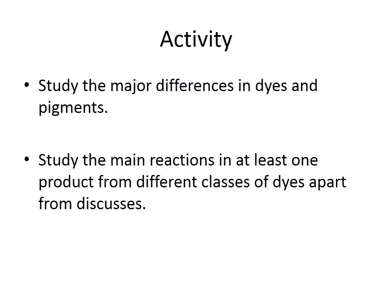An important activity for students is to study the major differences between dyes and pigments, and to study the main reactions for at least one product falling in each different category of dyes — azo dyes, basic dyes, mordant dyes, vat dyes, sulfur dyes, and so forth. I hope this makes you more comfortable in terms of understanding this topic. If you have a specific query you can get back to me through email or through our interaction group. Thank you.